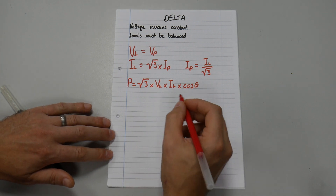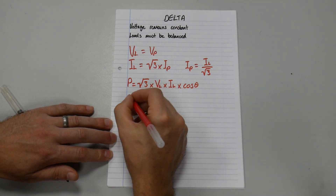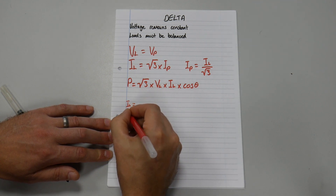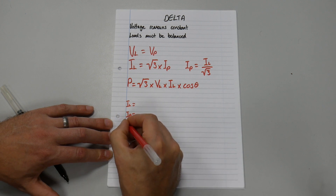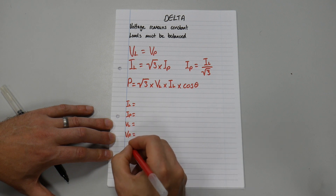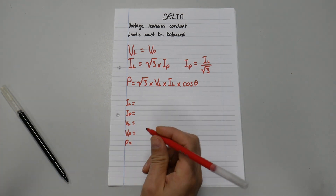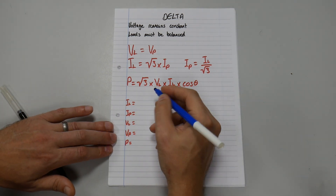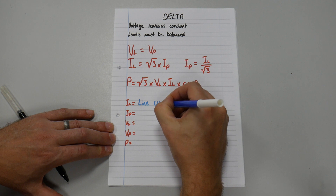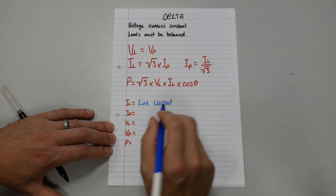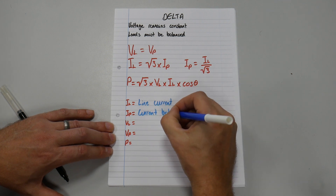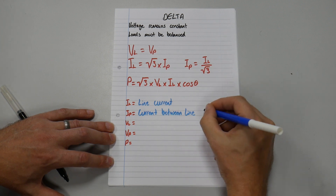Now let's write down what those symbols mean. So we have IL, IP, VL, VP, and P. IL is my line current. IP is the current between line conductors.